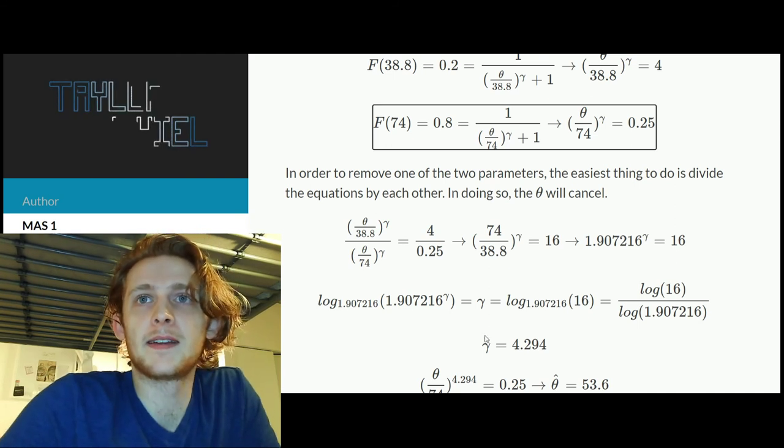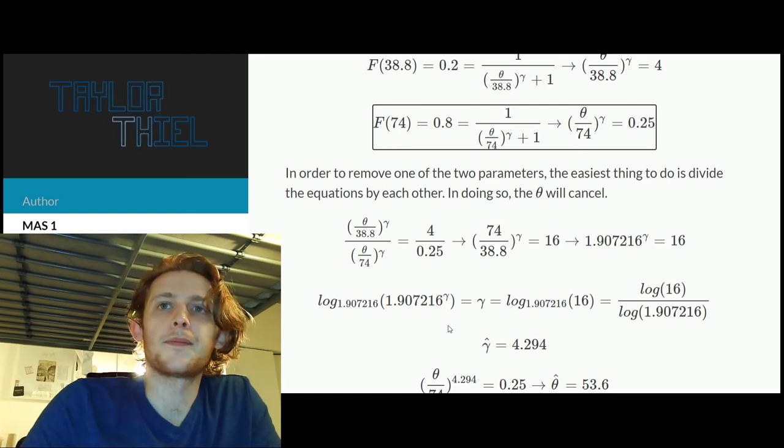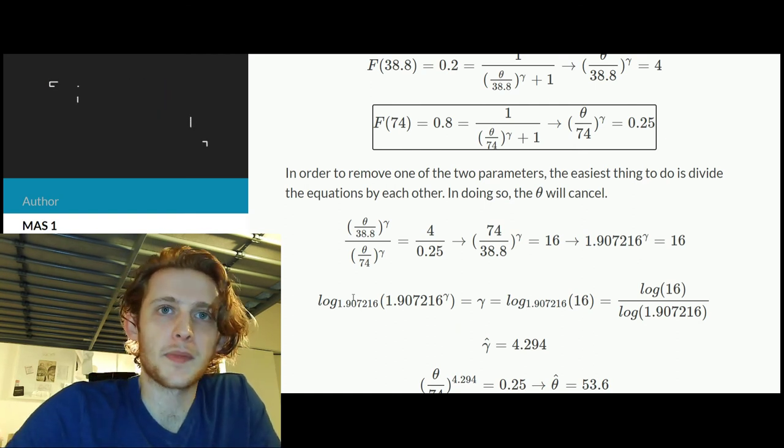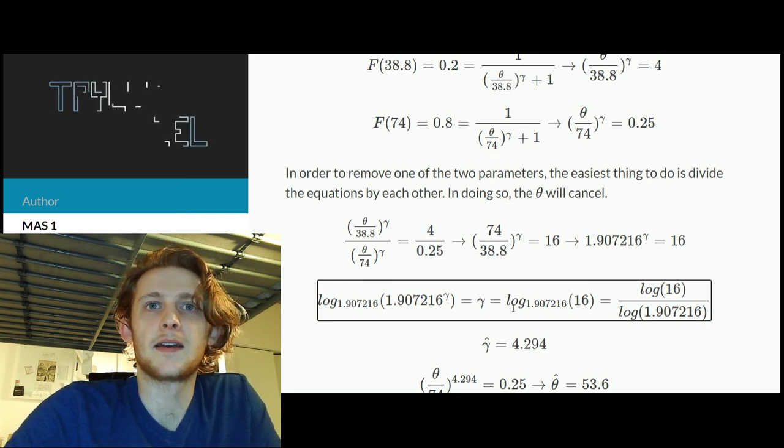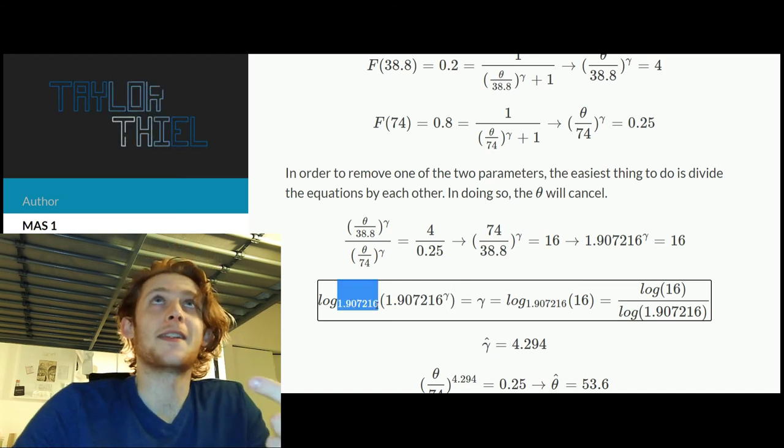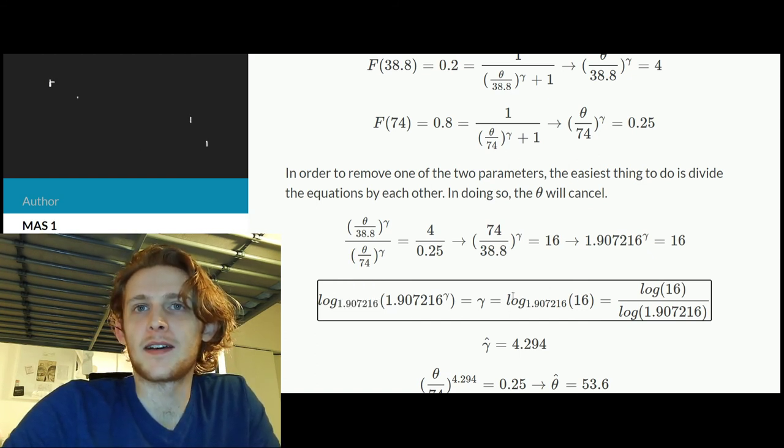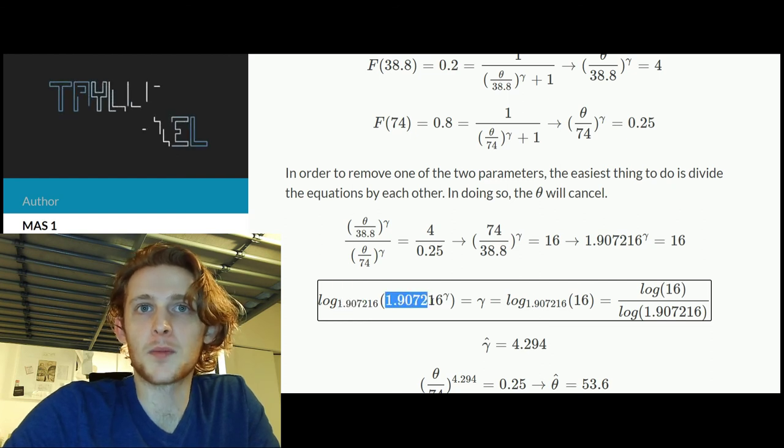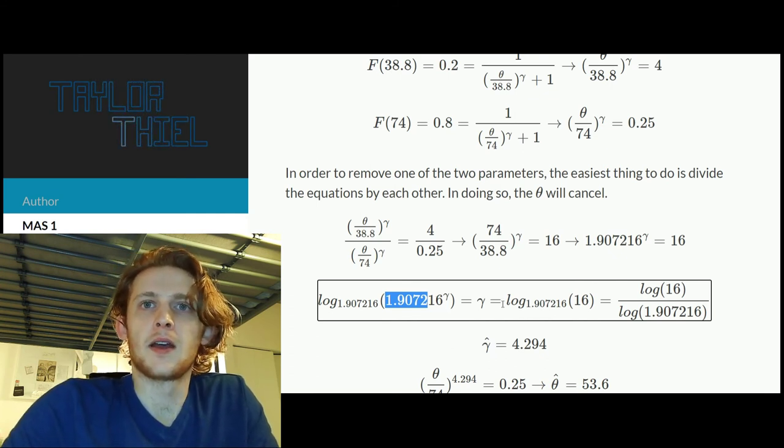So when we divide the one by the other, the thetas are going to cancel and then all we're left with is a function with gamma. At this point we're just doing some basic arithmetic, and then finally, a bit more complicated, dealing with this weird base. You need to know that taking the log base something of something else is the same as taking the log of that something divided by the log of that base, where the given log function can have any base.